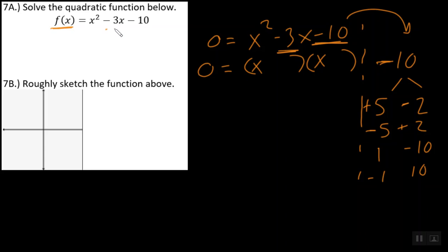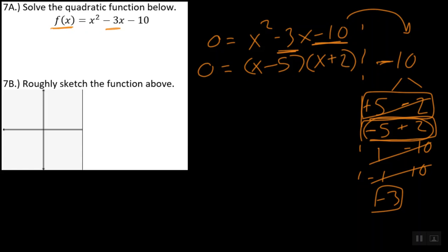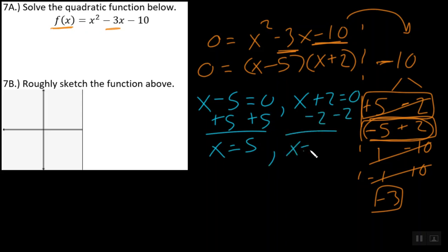So the question becomes, which pair will combine to be negative 3? And let's just go through this. 5 plus negative 2 is positive 3. That's not what we're looking for. And negative 5 plus 2 is actually negative 3. So these are the numbers that we're looking for. So that means I go to my factor and I write x minus 5 and x plus 2, and those are the two expressions that I set now equal to 0. In order to get x by itself, I can add 5 and add 5, and I get x equals 5, and right here I can subtract 2 and subtract 2, and x equals negative 2.